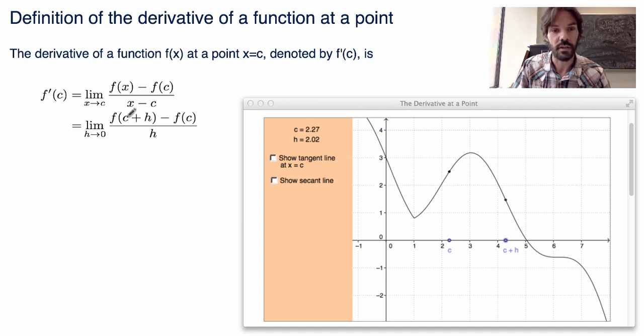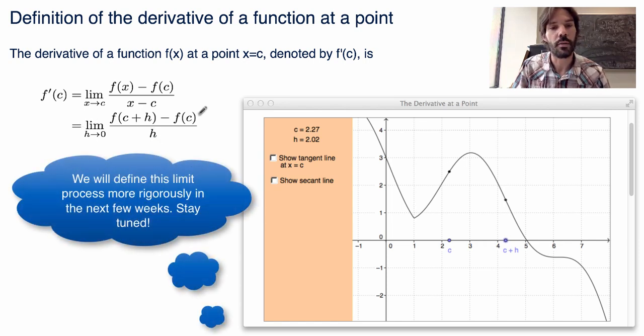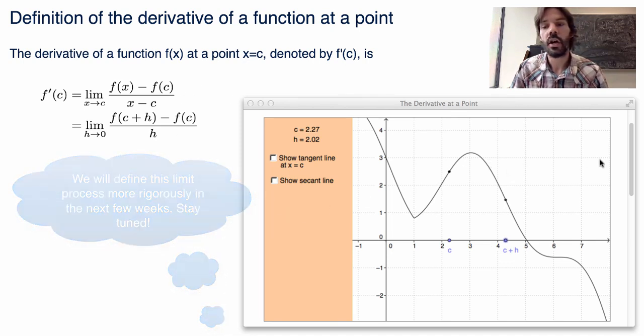So mathematically what we had was the y-coordinates, which is the function at c plus h minus the function at c, divided by c plus h minus c, which is h, then I'm sending h to 0. Now the way I wrote it in the previous videos was this way, which is exactly the same thing, but here I'm defining the point to be x-coordinate x instead of c plus h, but the two things here are precisely equal.